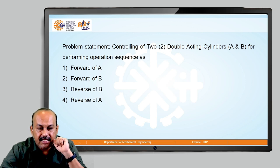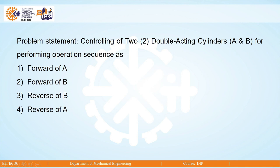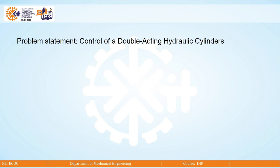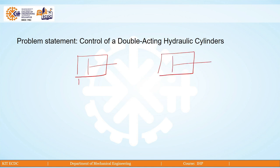Let us see how the problem statement has to be worked out and then we will check the simulation of the same. The problem statement involves two double acting cylinders: cylinder number 1, a double acting cylinder, and cylinder number 2, also a double acting cylinder, with their inputs and outputs in place.